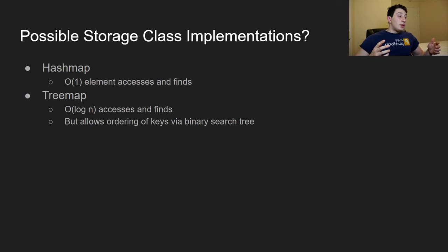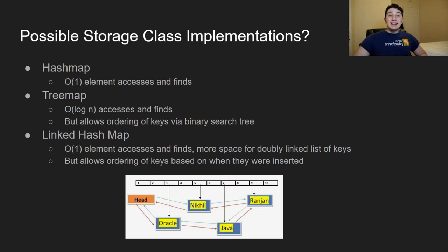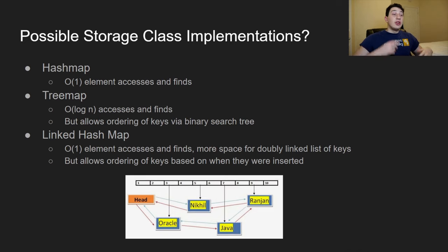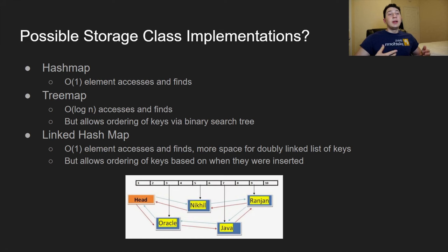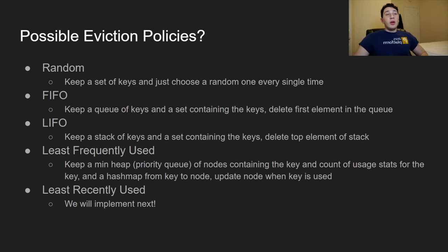The TreeMap ordering is useful for cache implementations where you might want to return a range of keys. There are trade-offs in time complexity, but if you need a sorted or ordered set, it can be really useful. Another implementation is the LinkedHashMap, which uses a HashMap but also maintains a doubly linked list between values, allowing you to determine insertion order of keys.